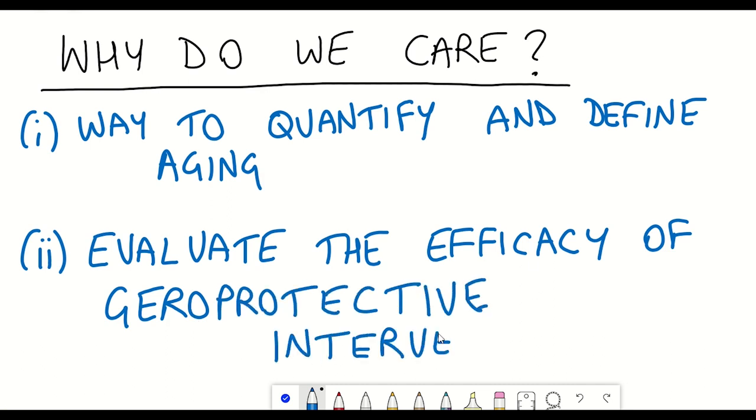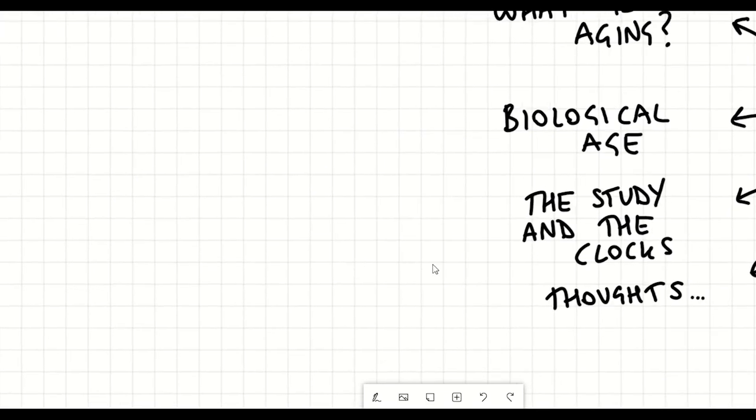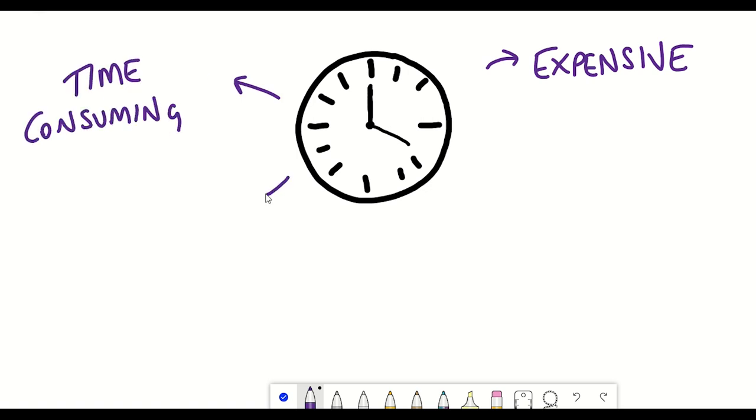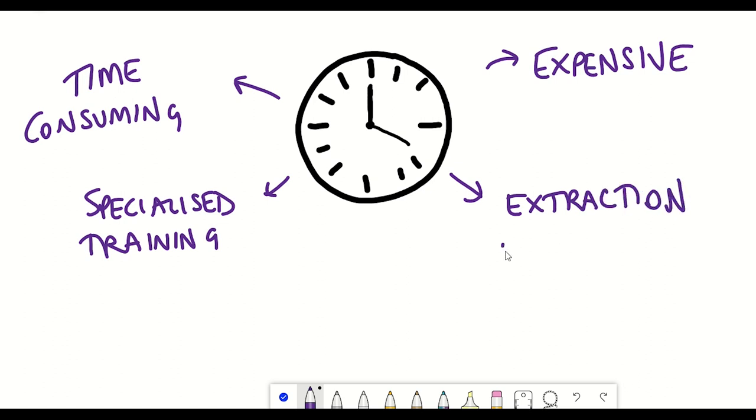However, some of the approaches that I've just mentioned such as DNA methylation clocks have the caveats of being currently quite expensive, time-consuming and requiring the extraction of blood or tissue from an individual. And for these reasons, some labs may not have access to be able to perform some of these clocks to be able to understand biological age and different aging interventions.